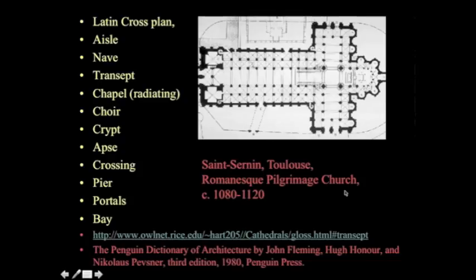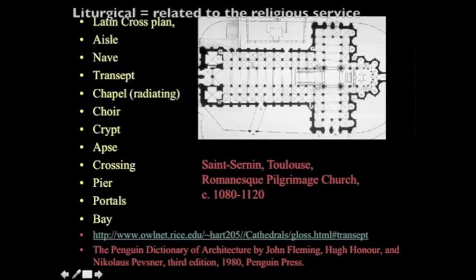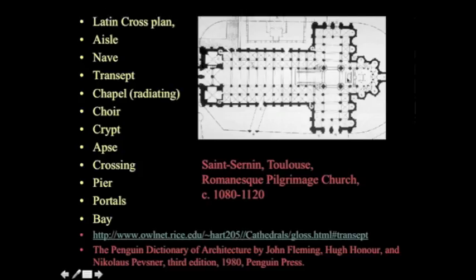Latin cross plan — a cross that's elongated on one side and shorter on the other. The reason it's elongated is for circulation and liturgical processions. Part of the way the rite is celebrated involves processions of people coming down the nave, so you need to have the longitudinal church.